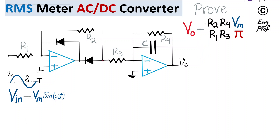With proper selection of the resistor values, we can have this circuit work effectively as an RMS meter or as a peak detector.